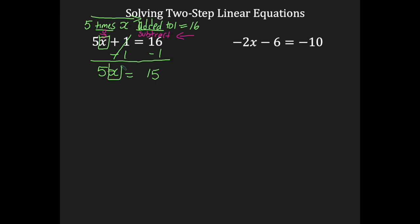I still have to get x by itself. I need to get rid of the 5. The 5 is connected to the x by multiplication, and the opposite of multiplication is division. We're going to use the fraction bar and divide by 5, because we want to get the x by itself. So we divide both sides by 5 — that's eliminated. You have x equals, and 15 divided by 5 is 3.